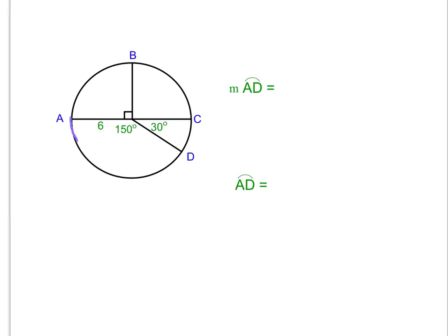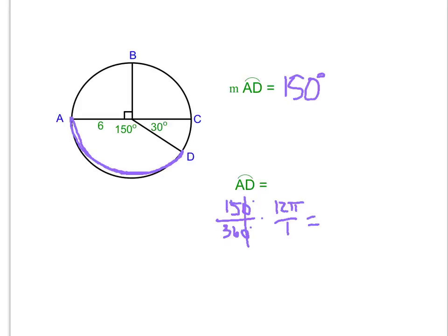Now for arc AD — its central angle is 150 degrees, so the measure of arc AD is 150 degrees. For the arc length: 150 over 360, multiplied by 12π. Reducing by 10 gives 15 over 36; dividing by 3 gives 5 over 12. Before multiplying straight across, the 12s cancel, leaving 5π. So the arc length from A to D is 5π units.